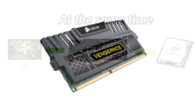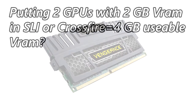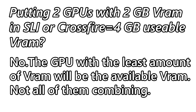This is one of the reasons why we don't use regular RAM as video memory. Now let's answer a common question about VRAM in SLI or Crossfire configurations: if I put two graphics cards with 2GB each in SLI or Crossfire, will I have 4GB of VRAM? The answer is no — putting two GPUs with 2GB of VRAM in SLI or Crossfire will not result in 4GB of usable VRAM. You will only have 2GB, the same as a single graphics card.